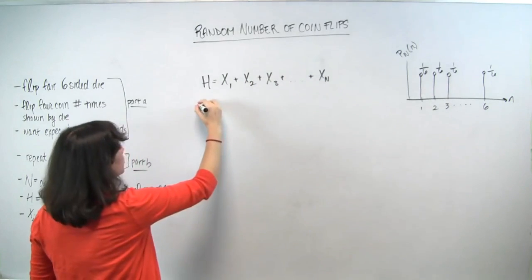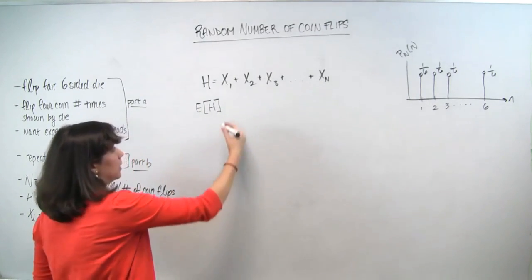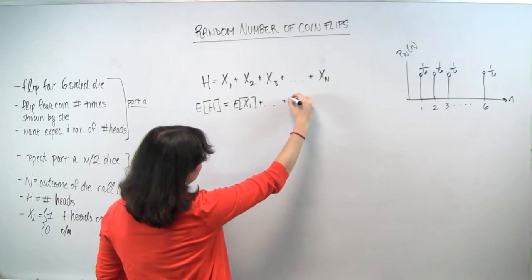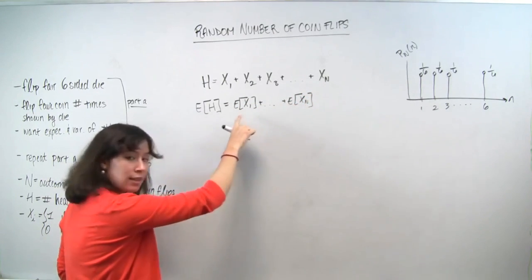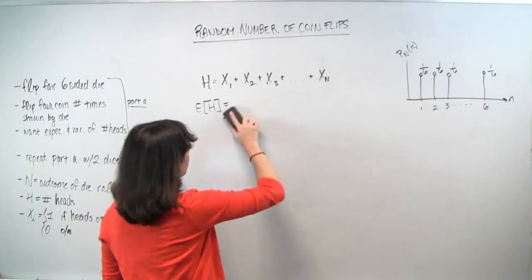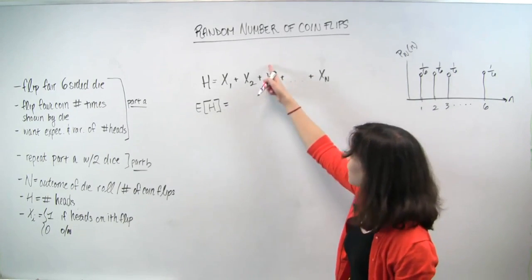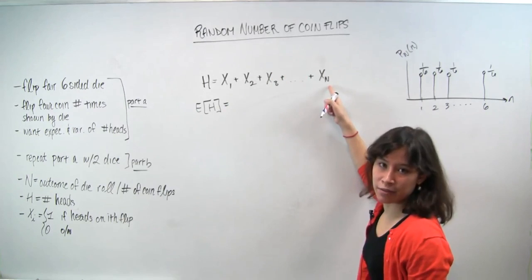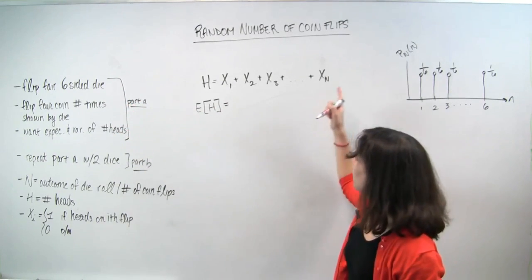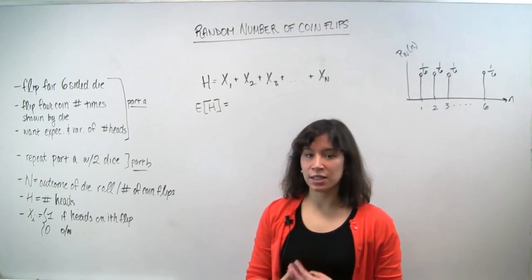Now we want to compute E[h], the expectation of h. Your knee-jerk reaction might be to say, by linearity of expectation, this is the expectation of x_1 through the expectation of x_N. But in this case you would actually be wrong — don't do that. The reason is that we are dealing with a random number of random variables. Each x_i is a random variable and we have capital N of them, but capital N is itself a random variable — it denotes the outcome of our die roll. So we cannot just take the sum of these expectations. Instead, we're going to condition on N and use iterated expectation.